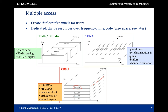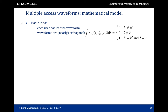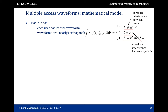TDMA, FDMA and CDMA can all be written in one mathematical model. We assign a unique waveform S_KL(t) for each user and make those waveforms approximately orthogonal. The integral of S_KL(t) times the complex conjugate of S_K'L'(t) should be approximately 0 for two different users (k ≠ k'), ensuring no inter-user interference; 0 for different symbol times (L ≠ L'), ensuring no inter-symbol interference; and 1 when k = k' and L = L'. The first condition ensures no inter-user interference; the second ensures no inter-symbol interference.